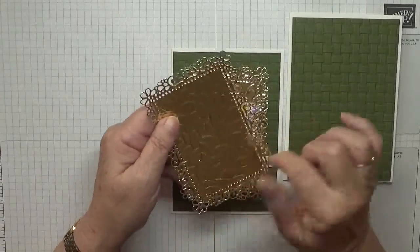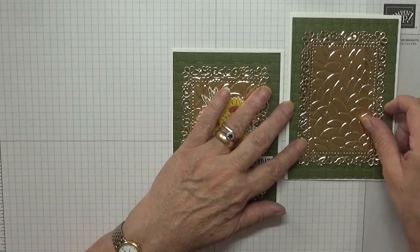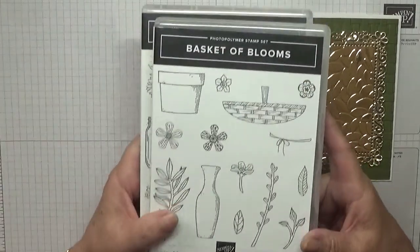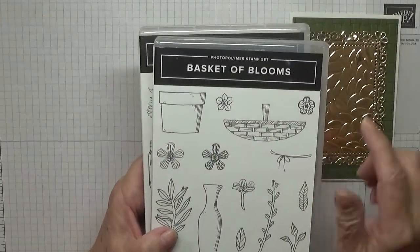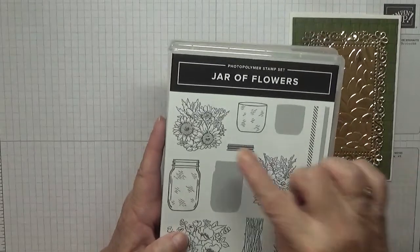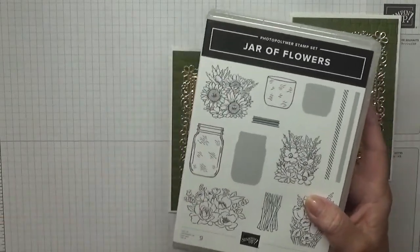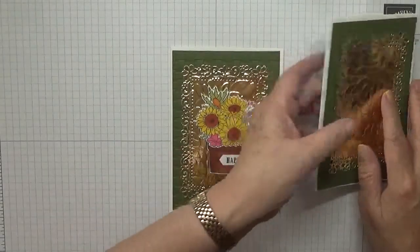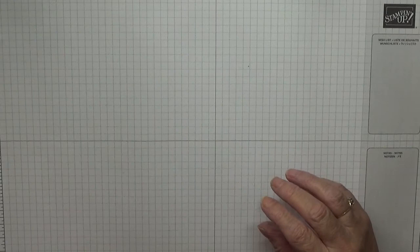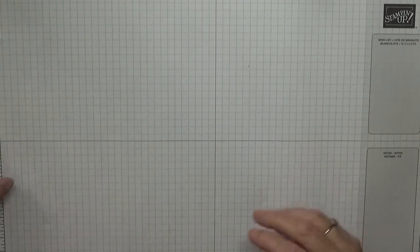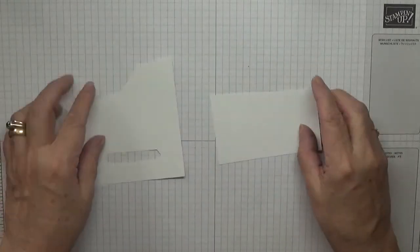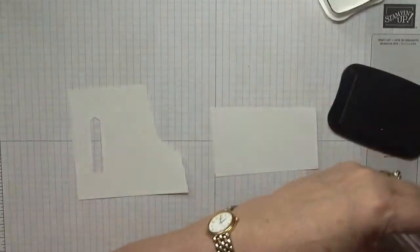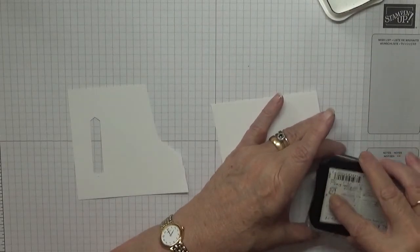The stamps that I'm using are Basket of Blooms, and I'm using the pot, the plant pot, and Jars of Flowers. I'm using the sunflowers. For the sentiment I've just used Clubhouse because I wanted that happy birthday. So to get started we need to do some stamping and coloring and cutting out by hand. With my Memento black ink I'm stamping up the sunflowers.